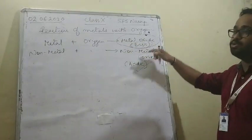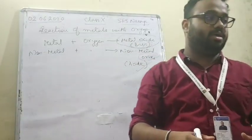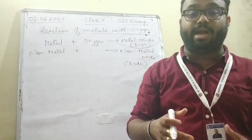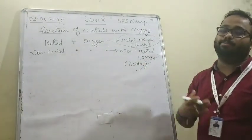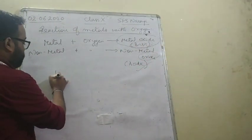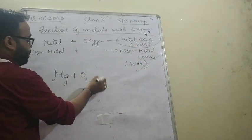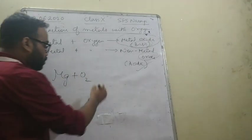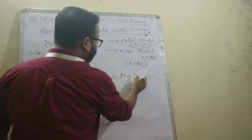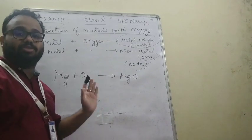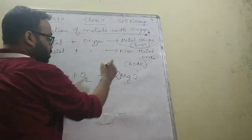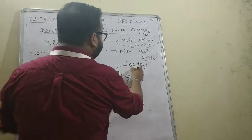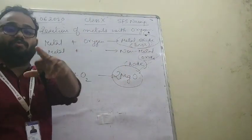Metallic oxides will turn red litmus to blue, and non-metallic oxides will turn blue litmus to red. For example, magnesium plus oxygen gives you magnesium oxide. You can balance it. Magnesium oxide is basic in nature.